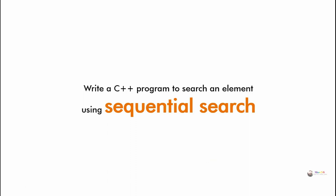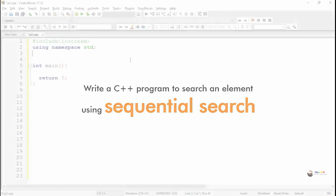Write a C++ program to search an element using sequential search. In sequential search, an array is searched to find whether a particular element is present or not, in sequential order starting from the first index till we get the element or till the last place. Once we get the element, the position of that element will be returned from the method.